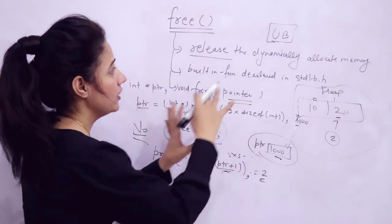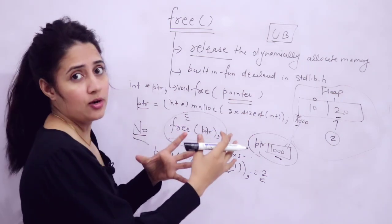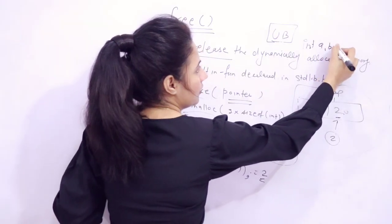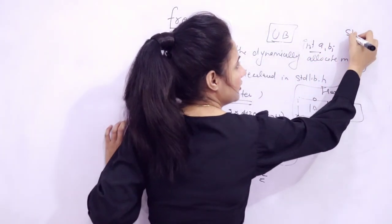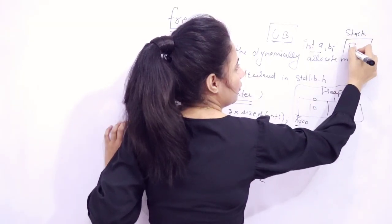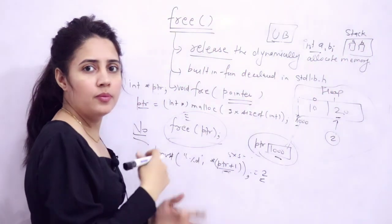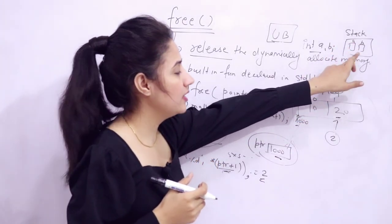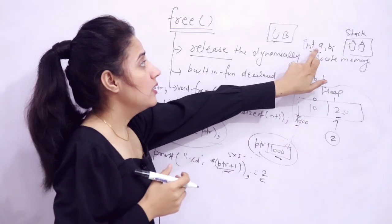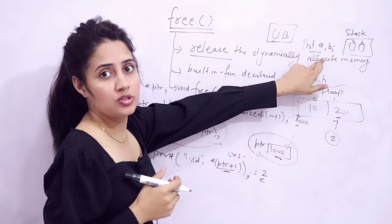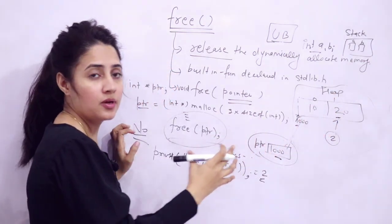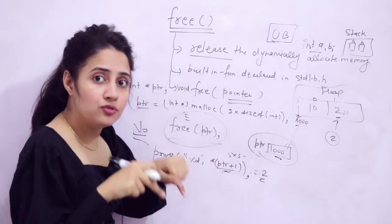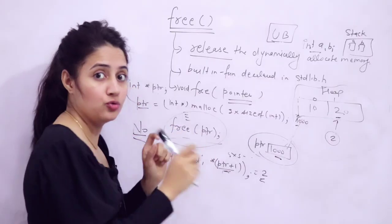Now, as we have seen, if you use static memory allocation — like int a or int b — that memory is allocated from the stack section and would be automatically released once you exit from the program. But in dynamic memory allocation from the heap section, the memory would not be released automatically. This is something you need to take care of — you have to free the memory using the free function.